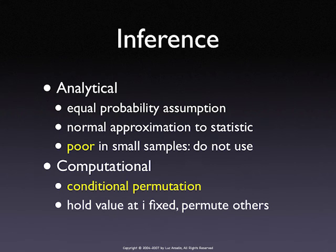The way to do it is computational — so-called conditional permutation. Why conditional? Because we hold a value fixed in a location, permute what's around it, and recompute the statistic. Rather than doing this for the whole dataset 999 times, we have to do this for each location 999 times. It's actually simpler because you only have to draw the immediate neighbors. If you have five neighbors, you just draw five from the pool, recompute the statistic, and do this multiple times. That gives you, for each location, an empirical reference distribution.